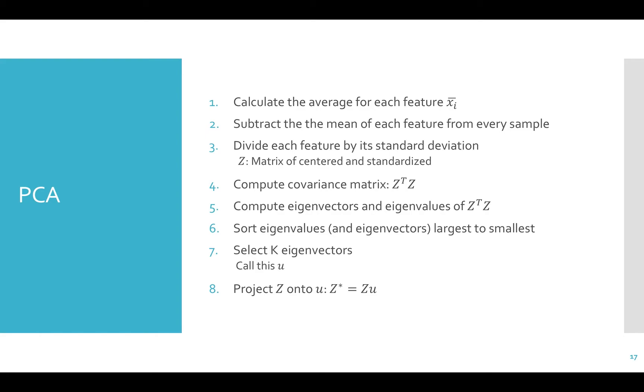Now that we're all comfortable with eigenvectors and eigenvalues again, we can jump right into PCA. There are 8 steps to the algorithm as we'll cover it in this class. You'll see that there are many variations of this algorithm. Some will have 4 steps, some will have 12. It's all the same stuff, just split up differently. Step 1: Calculate the average for each feature. This will be denoted by x with a little bar over it. Step 2: Subtract the mean of each feature from every sample. Step 3: Divide each feature by its standard deviation. We now have a new matrix Z to represent our data, which has been centered and standardized.